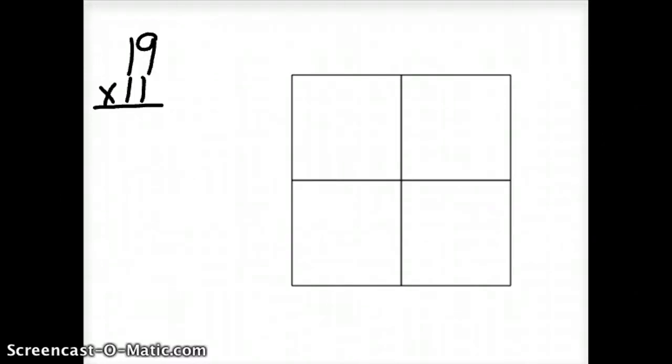Similar to the open array strategy, we're going to decompose our two numbers here. Our 19, we're going to split that into 10 and 9, and our 11, we're going to decompose that into 10 and 1.